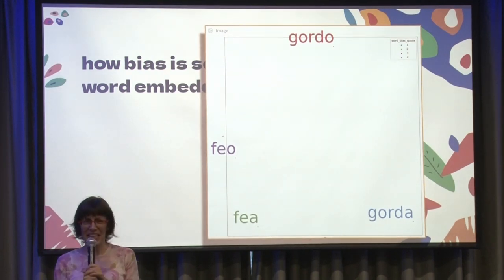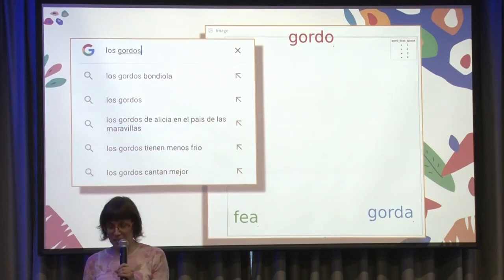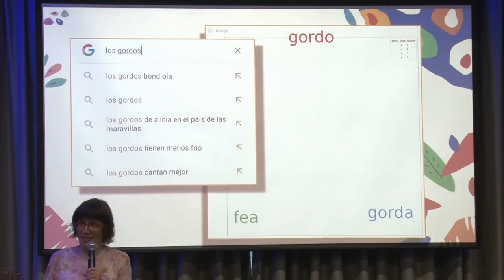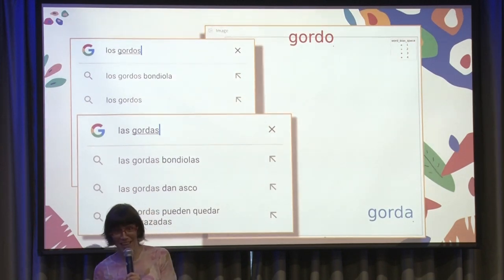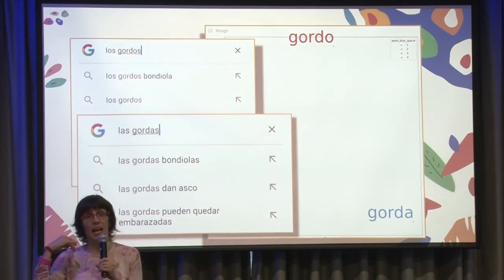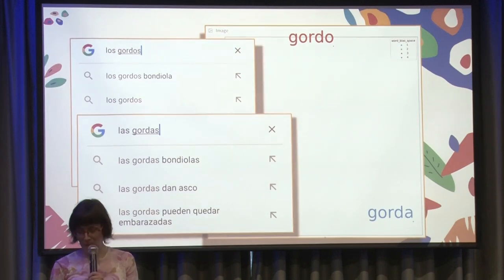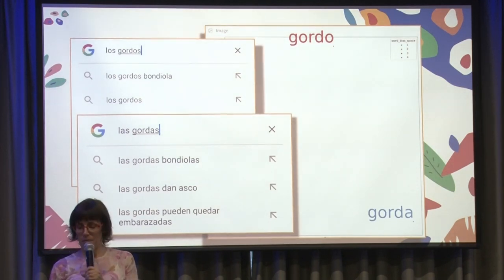How does this translate into discriminatory behavior of technologies? For example: the completion of 'fat' masculine plural gives results like 'gordos bondiola,' fat in Alice in Wonderland, and 'the fat suffer less the cold.' But for 'fat' in feminine plural, you get completions like 'they are disgusting' and 'they can get pregnant' — which are less positive completions.